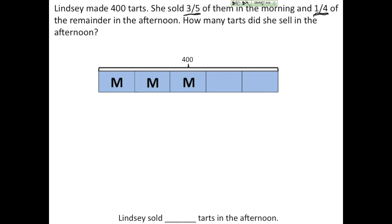The next part of the sentence says one-fourth of the remainder was sold in the afternoon. So we know that these two leftover units are the remainder and she sells one-fourth of the remainder in the afternoon. So I'm going to draw an arrow and I'm going to redraw the remainder. So this bar, the second bar, shows just what she has left over after she sold tarts in the morning.